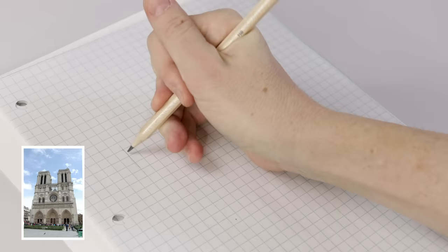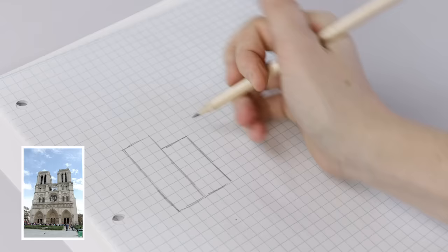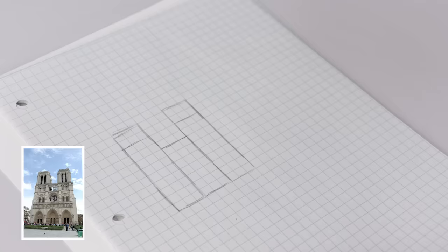With any building the first thing you want to think about is what shape is it. Just try to step back and think real simple what shape is it. Notre Dame is sort of divided into these three big columns and the graph paper makes that really easy for me to draw because I can make each column or each section of the building three squares wide.